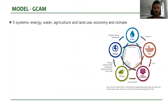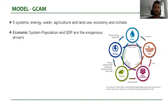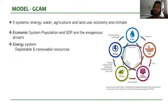I've also used GCAM. This is a partial equilibrium model which integrates human-Earth interactions in five systems: energy, water, agriculture, land use, economy, and climate. The economic system is composed of population and GDP, which are the drivers of activities. The energy system includes primary energy resource production, energy transformation, and final energy which delivers the final energy services, and it also considers trade in energy commodities. It distinguishes between depletable resources including fossil fuels and uranium, and renewable resources including different types of biomass, wind, photovoltaic, hydropower, and geothermal energy.